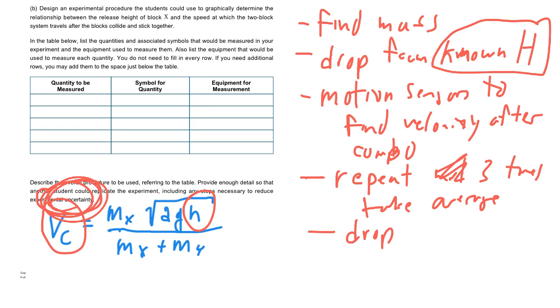So you could say drop it from five different heights, something like that. They do want you to say what you're going to do, what equipment you're going to use. So the three things we need to do is mass, use a scale; height, use a ruler; and then velocity, use a motion sensor.